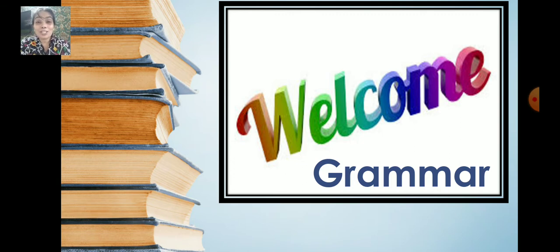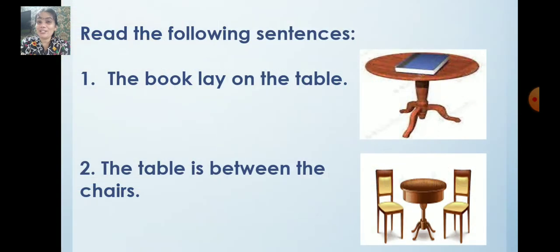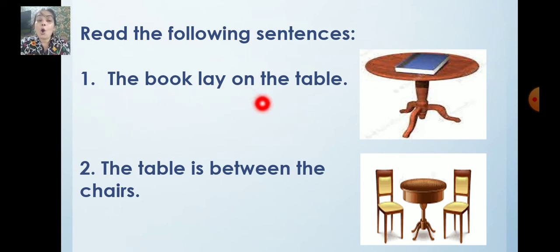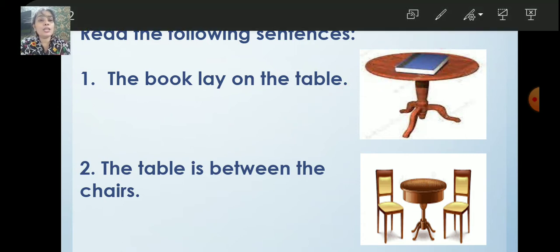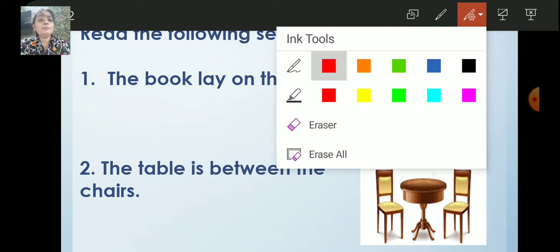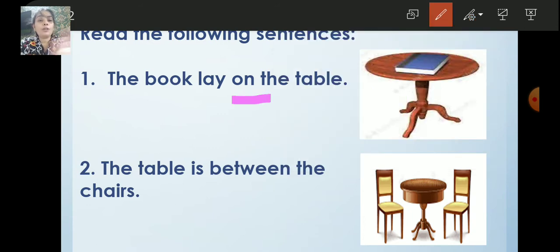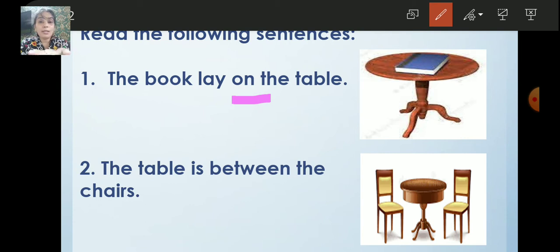So do you know what is preposition? We are going to learn now. Read the following sentences. Our first sentence is: the book lay on the table. So where is the book? Lying on the table. So the word 'on' shows the position of the book. Now where is the book? It is on the table, it is lying on the table.